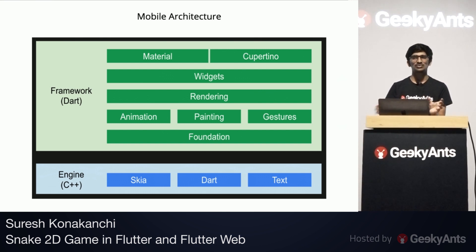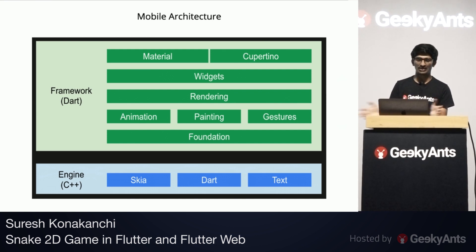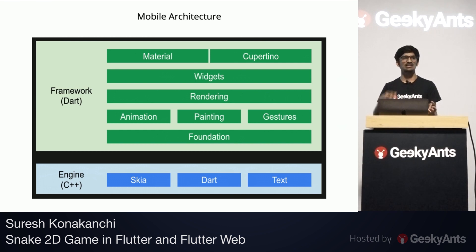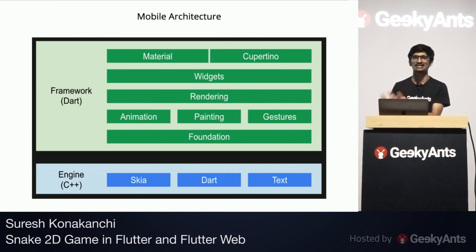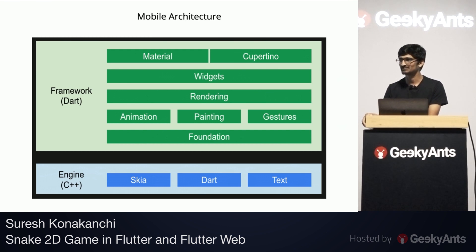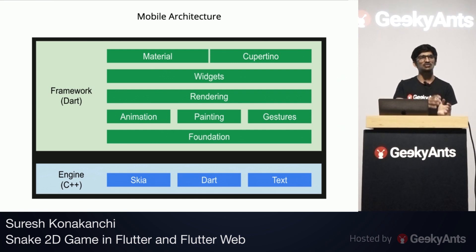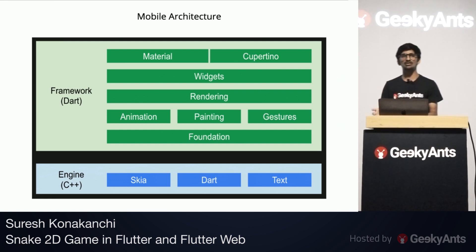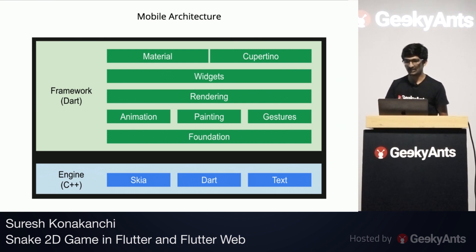Coming to the mobile architecture, the lowest level is the engine, which is the core. It builds things and shows the complete layout. The engine does not know anything about animations, painting, widgets or layouts — it just knows text layout. The engine is made up of Skia, Dart and text. Skia is a graphics engine, initially developed by the company Skia and later handed over to Google. Currently all Google products use Skia, and Flutter uses Skia as well.